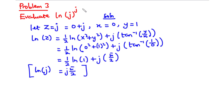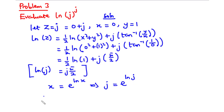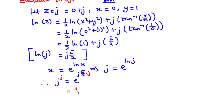Now let's focus on the exponent. Using the identity x equals e to the power ln of x, we can say j equals e to the power ln of j. Since ln of j equals j·pi over 2, raising both sides to the power j gives: j to the j equals e to the power (j·pi over 2 times j), which simplifies to e to the power (j squared times pi over 2).